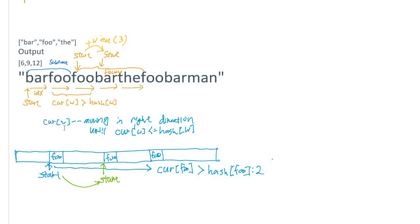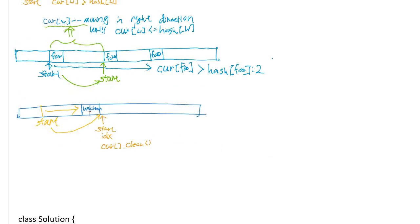When moving the starting point, we must decrease the word count for the segments we jump over. For example, if we encounter a third 'foo' when the hash table only allows two, we move the starting point to the second 'foo' and subtract the word counts along the way. The last improvement is handling unknown words: when we encounter a word not in the word list, we move the starting point past that unknown word entirely, since it cannot be part of any valid concatenation.